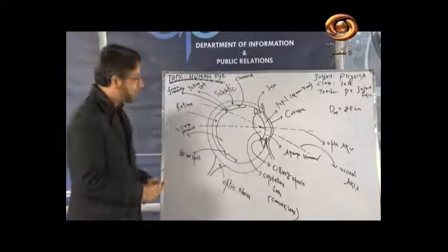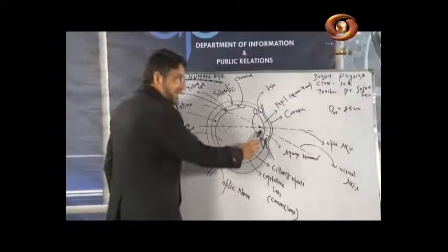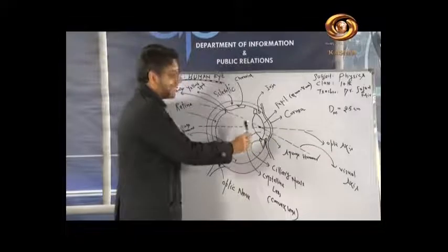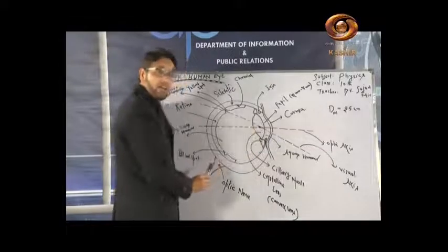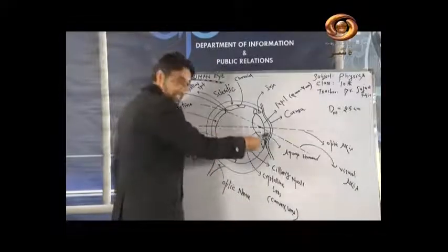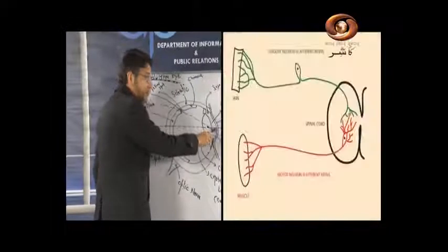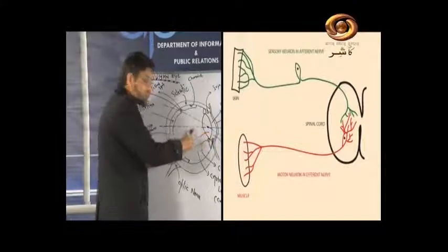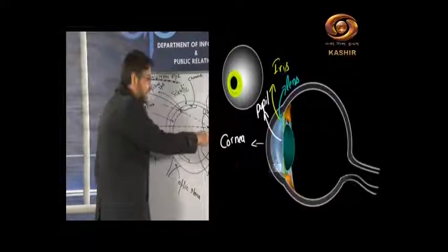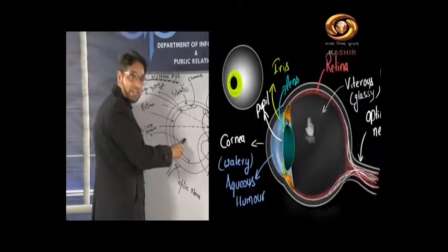The human eye is divided into two regions by the crystalline lens. The region in front of the lens is called the anterior region, and the region behind the lens is called the posterior region. Each region contains a liquid — a fluid — inside it.